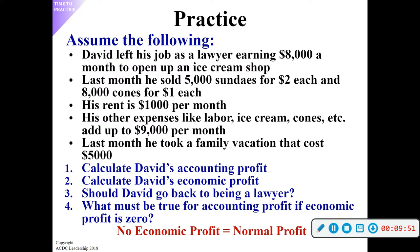If economic profit is zero, accounting profit must be positive. Zero economic profit is sometimes called a normal profit on the test. It's not necessarily a bad thing — you're taking into account the opportunity cost he gave up by no longer being a lawyer. Accountants don't care about that foregone income, but economists account for the opportunity cost as well. In the real world, he's still making money monetarily.